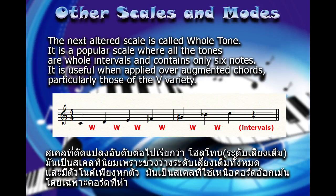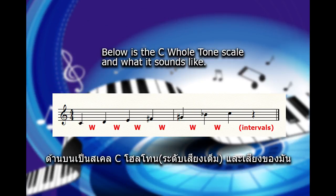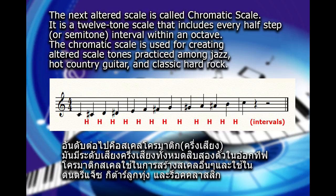The next altered scale is called the whole tone scale. It is a popular scale where all the tones are whole intervals and contains only six notes. It is useful when applied over augmented chords, particularly those of the fifth variety. Below is the C whole tone scale and what it sounds like.